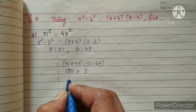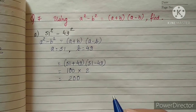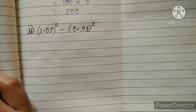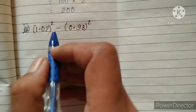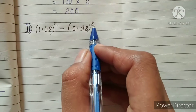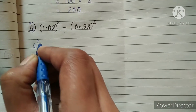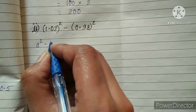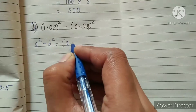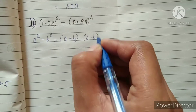200 is the solution of part (a). Part (b) is 1.02 squared minus 0.98 squared. The identity is a squared minus b squared written as a plus b multiplied by a minus b.